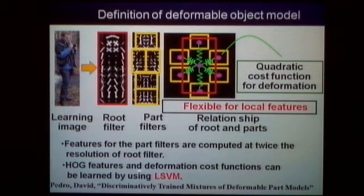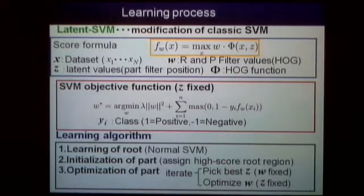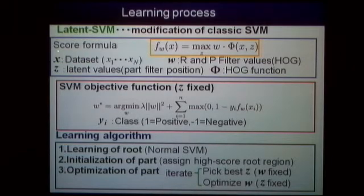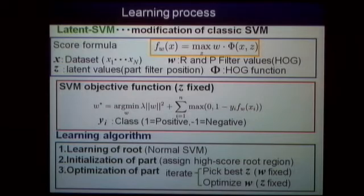The springs represent a quadratic cost function for deformation. The HOG features and deformation cost functions are learned using latent support vector machines. The latent SVM is a modification of classic SVMs. Here, X is the training dataset — the root and part filter values — and Z represents the latent values, in this case the part filter positions. Phi is the feature function of the input images. The score formula for obtaining optimal W and Z is defined by the maximum inner product of W and phi over Z given X. The optimal W minimizes the SVM objective function when Z is fixed.